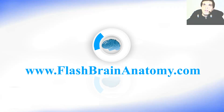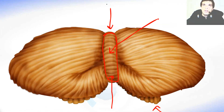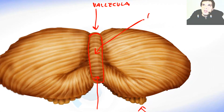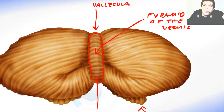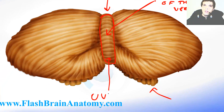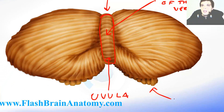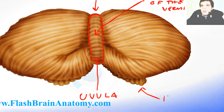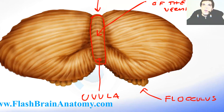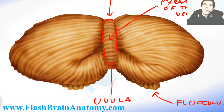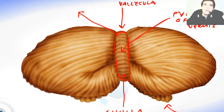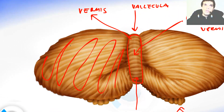Now let's write this all down. This was the vallecula and this was the pyramid of the vermis. This was the uvula and this was the flocculus. This whole thing was the vermis and this was the hemisphere.